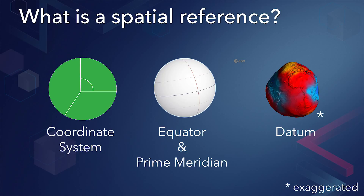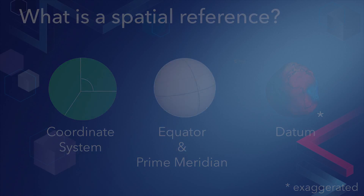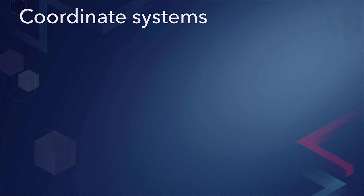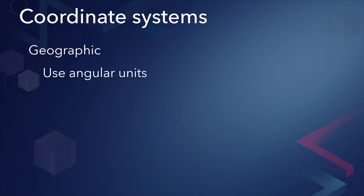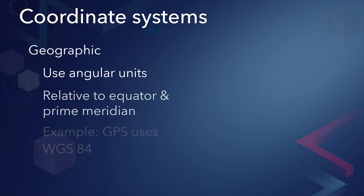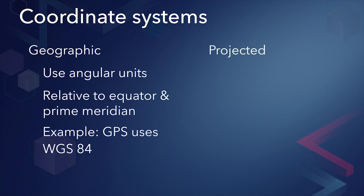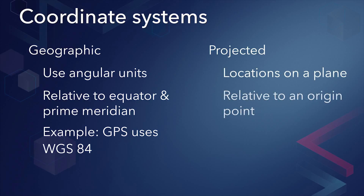The most significant aspect of the spatial reference is the coordinate system. Coordinate systems fall into one of two categories. Geographic coordinate systems use angular units such as degrees to define locations relative to the equator and prime meridian. GPS coordinates are in a geographic coordinate system known as WGS84. Projected coordinate systems define locations on a plane relative to an origin point and are used to display Earth's curved surface on a flat surface, like a computer screen.